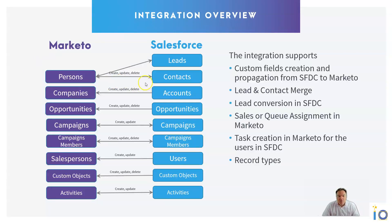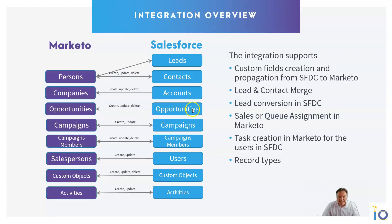We have unidirectional flows for accounts, opportunities, users, and custom objects. All the accounts from Salesforce visible by the Marketo user will be pushed to Marketo. All the opportunities and their attached contacts will also be pushed to Marketo.